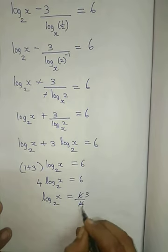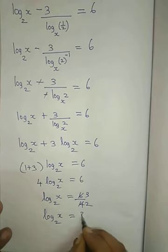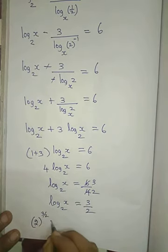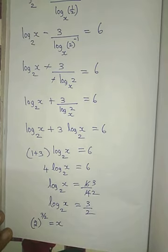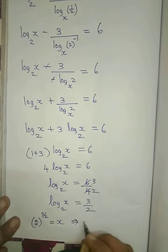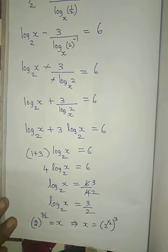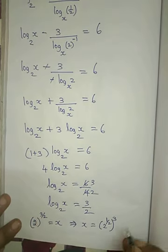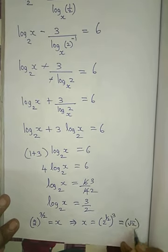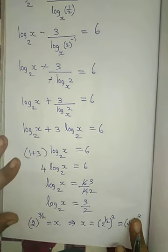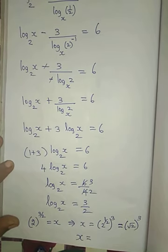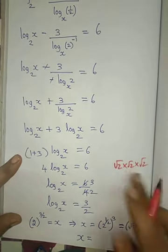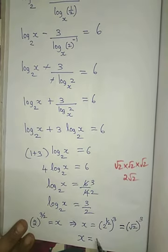So log x to the base 2 equals 3/2. Writing this in exponential form: 2 to the power 3/2 equals x. This can be written as x equals 2 to the power (1/2 × 3), since 1/2 into 3 is 3/2. Now 2 to the power 1/2 is root 2, so x equals root 2 whole cubed. Multiplying root 2 three times: root 2 times root 2 is 2, times root 2 gives 2 root 2. The answer is x = 2√2.